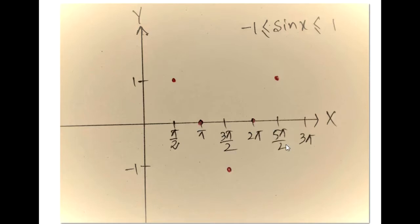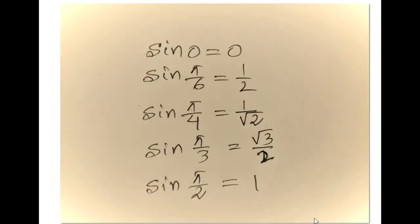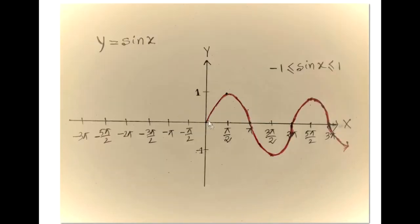From 0 to pi over 2, the value of sin x is increasing, but not equally increasing. So the curve will start from sin 0 equals 0, and I will add those points and it will be like a curve, because the value from sin 0 to sin pi over 2 is not equally increasing. So it is like a curve and it is increasing.